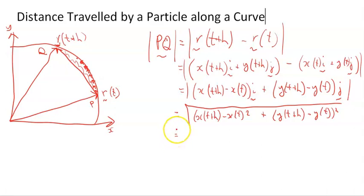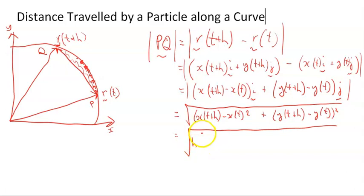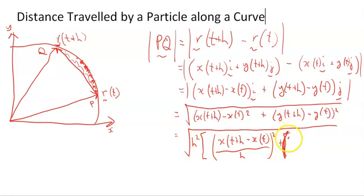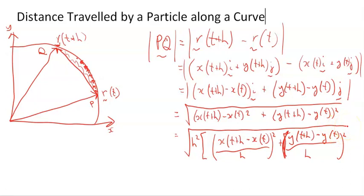The way we can handle this: if we divide inside by H squared and have a factor of H squared out here, we get the square root of H squared times the quantity: X of T plus H minus X of T all over H, squared, plus Y of T plus H minus Y of T all over H, squared. Notice it's still the same thing — dividing by H squared inside but with a factor of H squared outside, so they cancel. We're not adding anything new.